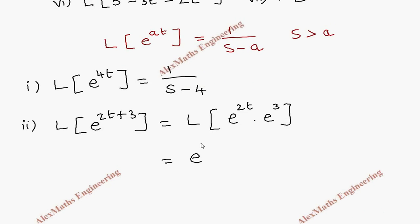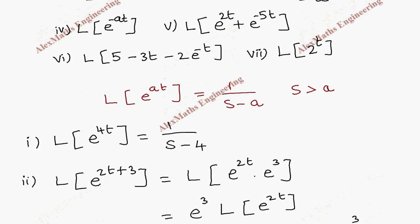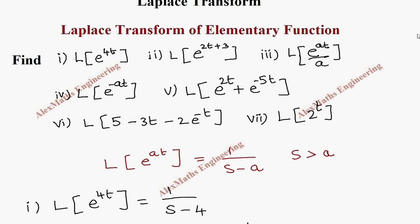The Laplace transform of e^(2t + 3) can be split into two parts: L{e^(2t) · e^3}. Since e^3 is a constant, it is taken outside, giving e^3 · L{e^(2t)}. Now the Laplace transform of e^(2t) is 1/(s - 2), so by rearranging we get e^3 / (s - 2).